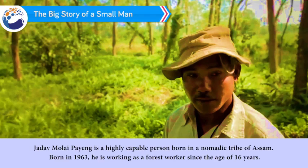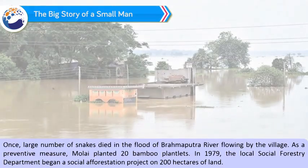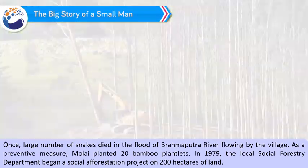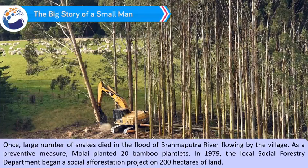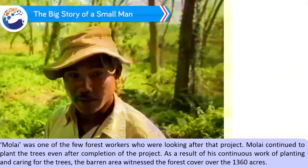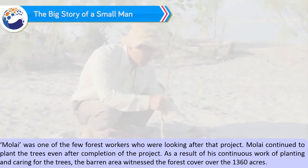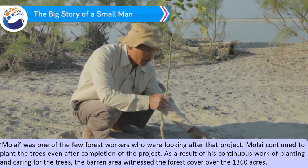The Big Story of a Small Man: Jadav Molai Payeng is a highly capable person born in a nomadic tribe of Assam. Born in 1963, he has been working as a forest worker since the age of 16 years. Once, a large number of snakes died in the flood of the Brahmaputra River flowing by his village. As a preventive measure, Molai planted 20 bamboo plantlets. In 1979, the local social forestry department began a social afforestation project on 200 hectares of land, and Molai was one of the few forest workers looking after that project. Molai continued to plant trees even after completion of the project, and as a result of his continuous work the barren area witnessed forest cover over 1360 acres.